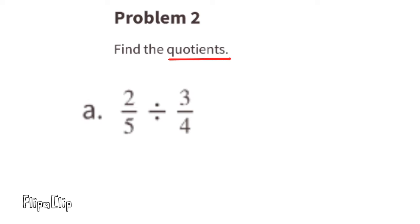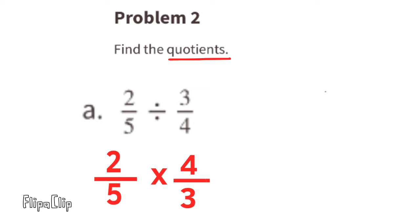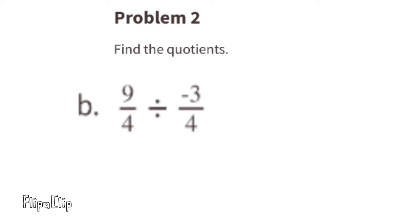Problem number two: find the quotients. Part a: 2 fifths divided by 3 fourths. We can change this to a multiplication problem by multiplying 2 fifths by the reciprocal of 3 fourths. Now we have 2 fifths times 4 thirds, which equals 8 fifteenths. Part b: 9 fourths divided by negative 3 fourths. This is a positive divided by a negative, so the quotient will be negative.